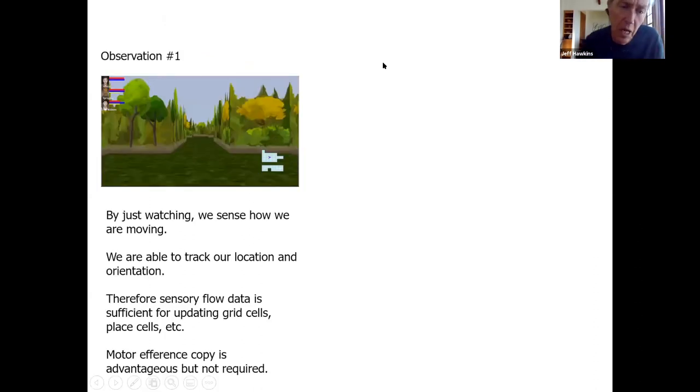Now this whole thing got started by an observation of mine. If you're watching someone playing a video game, you know how that player is moving - going forward, backwards, turning left and right. You can learn a model of the environment just by watching the screen. What that proved to me was that you didn't need an efference copy motor command to track your location and update your grid cells and place cells.